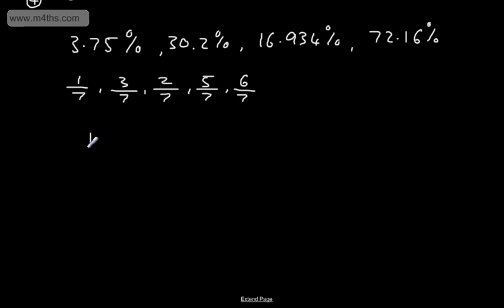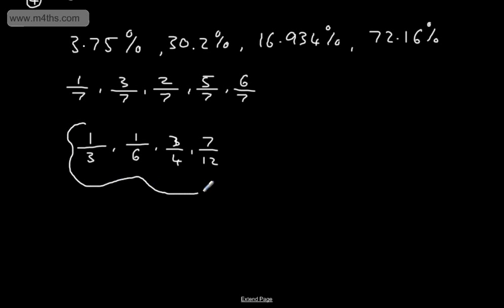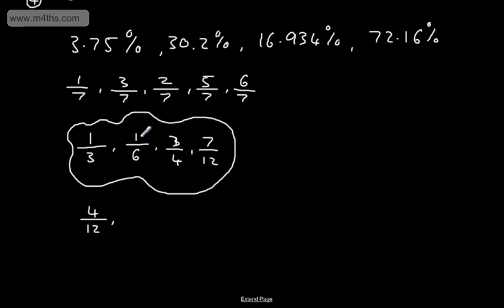Sometimes we won't have common denominators. So let's look at an example: we're going to order 1/3, 1/6, 3/4, and 7/12. If we have this scenario, we look to get a common denominator. The lowest common multiple — the first number that 3, 6, 4, and 12 all go into — will be 12. So I'm going to convert all of these into twelfths. 1/3 becomes 4/12, 1/6 becomes 2/12, 3/4 becomes 9/12, and 7/12 stays as 7/12.